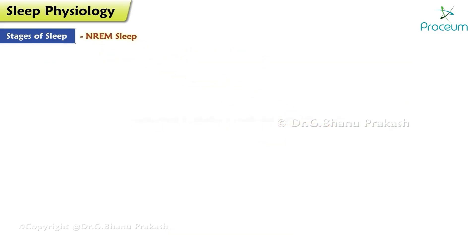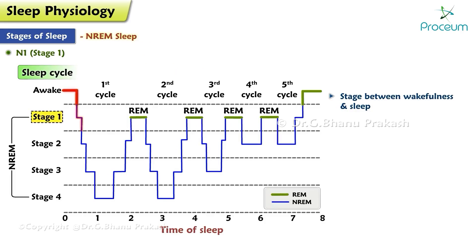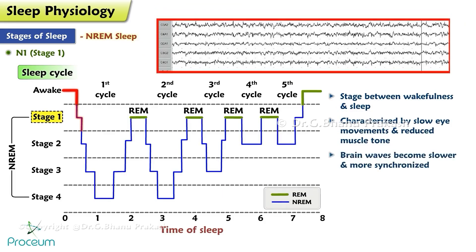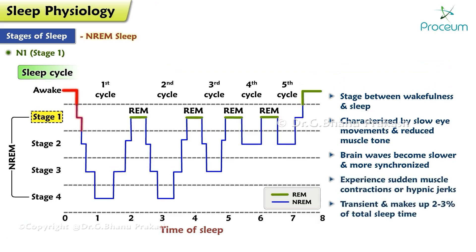Non-rapid eye movement sleep is characterized by a reduction in muscle tone and metabolic activity. It is further divided into three stages. Stage N1 marks the transition between wakefulness and sleep, and is characterized by slow eye movements and reduced muscle tone. During this stage, brain waves become slower and more synchronized, and people may experience sudden muscle contractions called hypnic jerks. N1 is transient and makes up two to three percent of total sleep time.